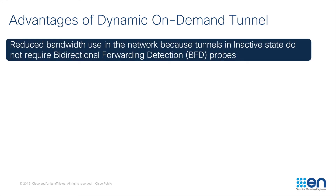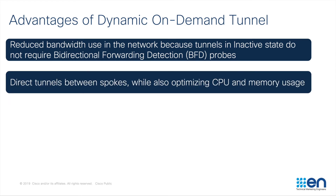It reduces bandwidth use in the network because the tunnels which are in inactive state do not require to send bidirectional forwarding detection probes, which are the BFD probes. We can form direct tunnels between the spokes while also optimizing the CPU and the memory usage.